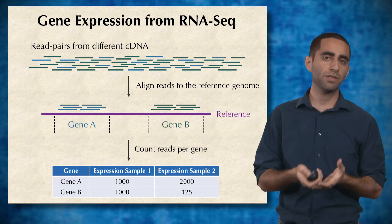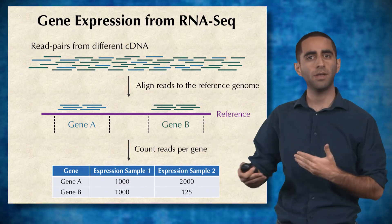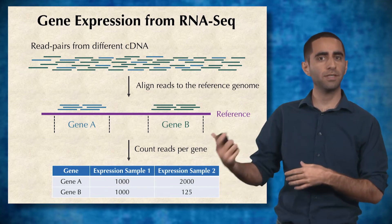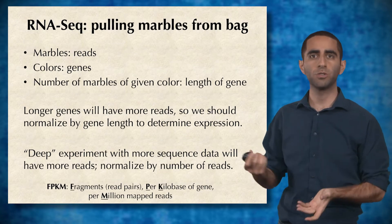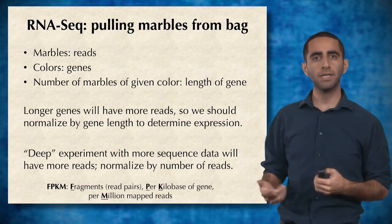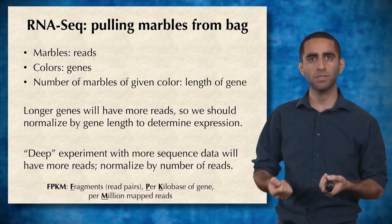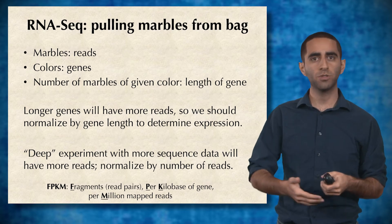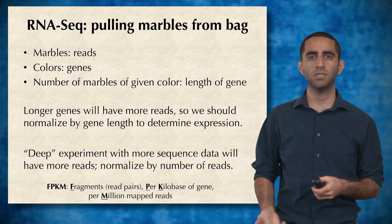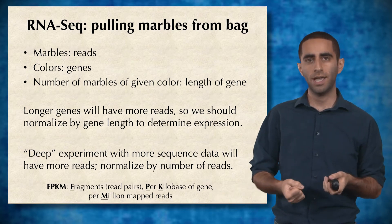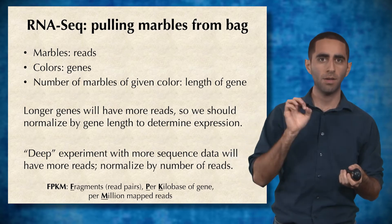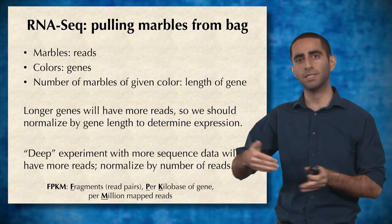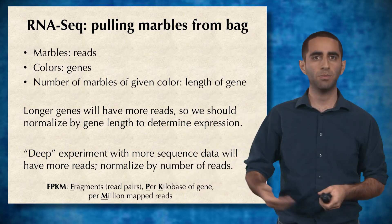However, this expression matrix is not the endpoint — we have to normalize the expression values. To motivate this normalization, we can convert it into a marbles-from-a-bag problem. In RNA-seq, the marbles are our reads, the colors represent genes, and the number of marbles for each color represents the length of the gene. You have a bag of marbles with different colors, and you're randomly drawing marbles — how many of each color you draw is essentially your gene expression matrix.